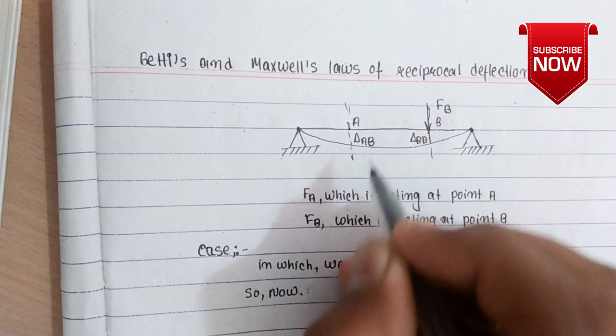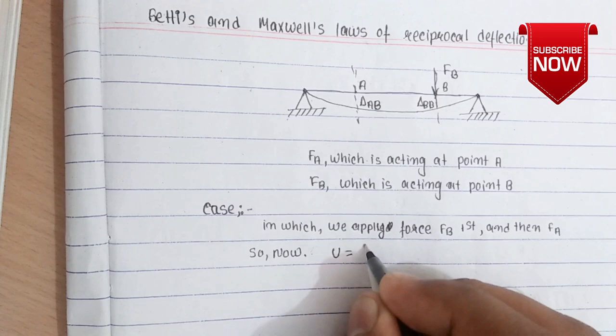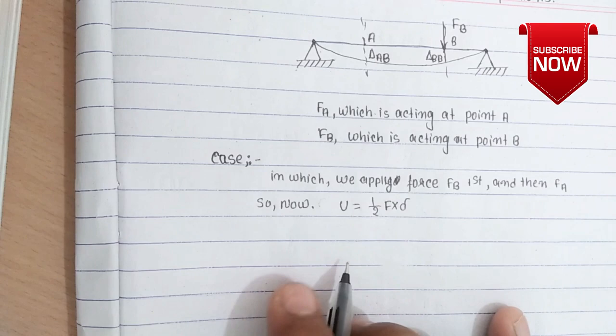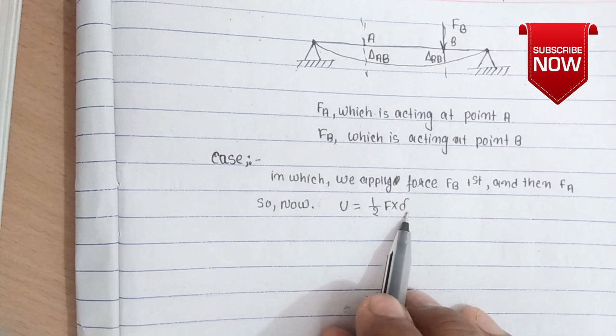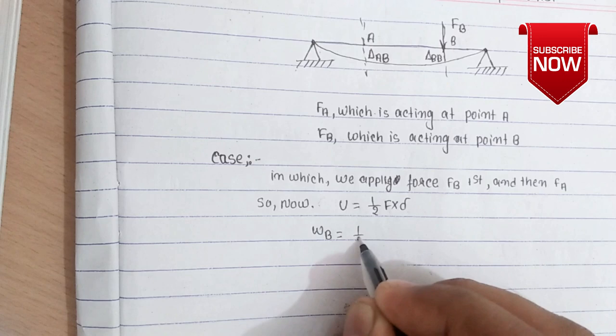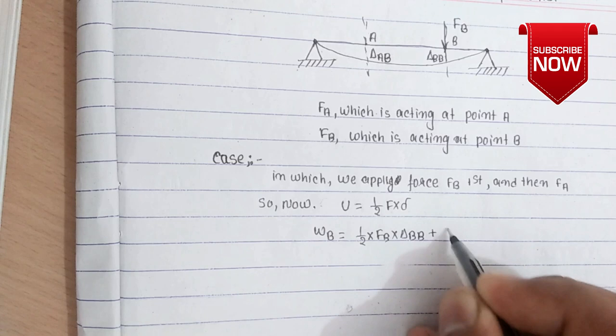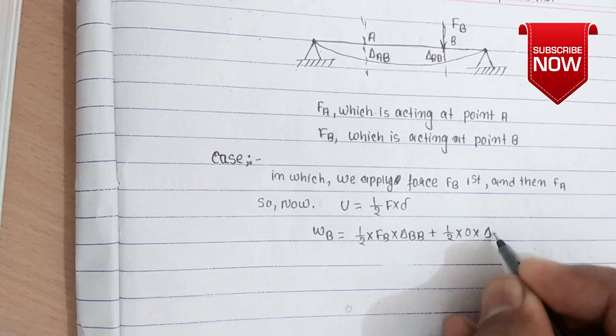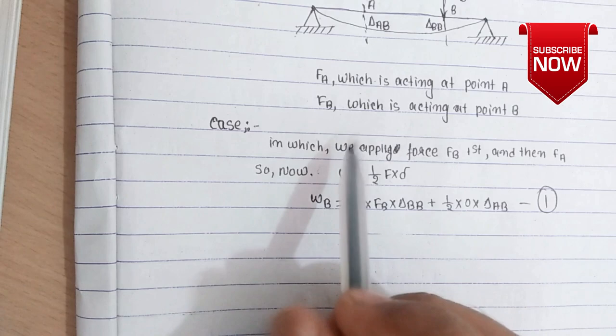And at point A, the deflection at A due to force F_B is delta A_B. We know that strain energy is related to force and deflection. The work done due to force F_B equals half times F_B times delta B_B, plus the force at A is zero, so zero times delta A_B. This is equation one.